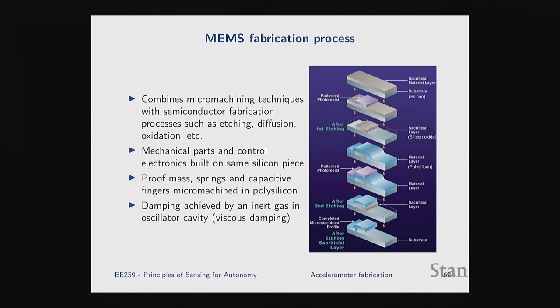What's really nice about MEMS is that on one silicon chip you can fabricate both your mechanical structure — the mass, the springs, the damping mechanism, the capacitor plates or fingers — as well as all your electronics. It's all monolithically fabricated on one die. You get one chip that has everything integrated in it.